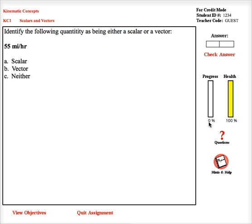Two little bars that sort of keep track of your progress in your health as you do the assignment, a place to get information about your questions, and the often overlooked Hints and Help button that will give question-specific information about this question.